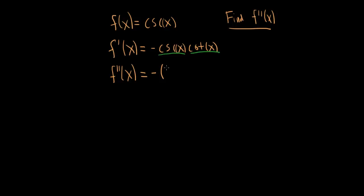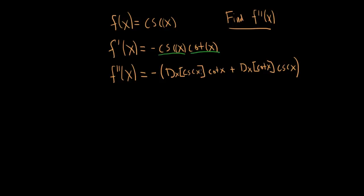This is my first function and this is my second function. The product rule says take the derivative of your first function — the derivative of cosecant x — and multiply by your second function, cotangent x. Then add the derivative of your second function times your first function, cosecant x. The x is the only argument for all of these, so we don't have any chain rule to worry about.